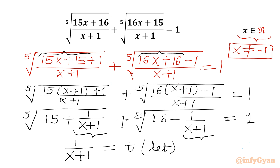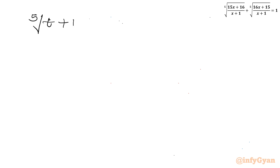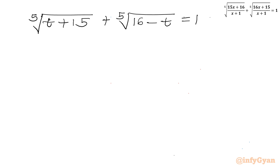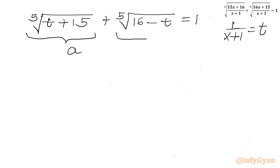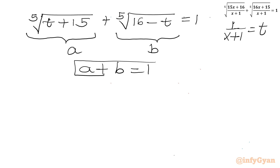With the substitution t = 1/(x+1), our equation becomes: 5th root of (t + 15) plus 5th root of (16 − t) equals 1. Let me call these two radicals a and b respectively, so our first equation is a + b = 1.